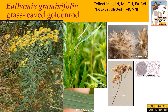Euthamia graminifolia, or grass-leaf goldenrod, can be found in moist to drier thickets and open areas. It grows one to four feet tall and has branched stems. It has narrow, long, grass-like leaves. The larger leaves have three prominent veins and sometimes two additional obscure veins. Its flowers form in flat, open clusters of yellow. The flat-top floral arrangement and narrow leaves of this goldenrod easily distinguish it from other goldenrods. Collection time typically takes place in mid-October. Cut off the entire flower head and remove the chaff and fluff from the seed in an area sheltered from the wind.